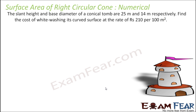The next problem is pretty easy because the slant height and base diameter of the conical tomb are given. The slant height is given, and the base diameter is 14 meters, so the radius is 7 meters. This is a conical tomb whose slant height and radius are given.